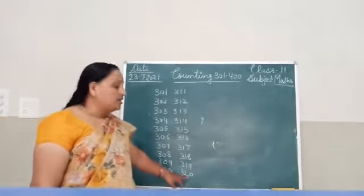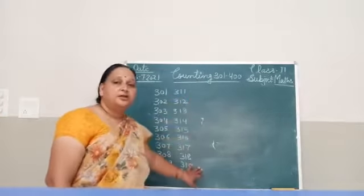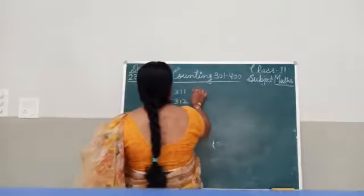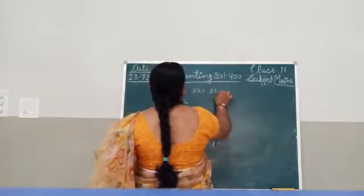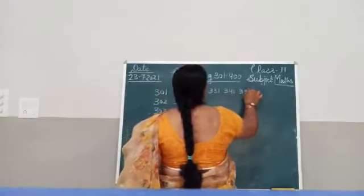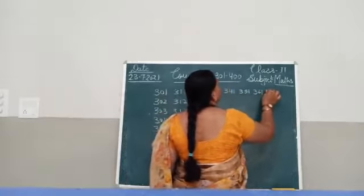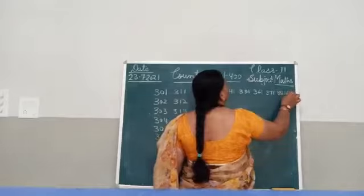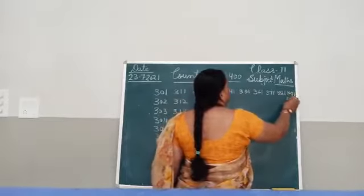Now after 320, which number comes next? 321. So we will write 321. Afterwards 321, 331, 341, 351, 361, 371, 381, and 391.